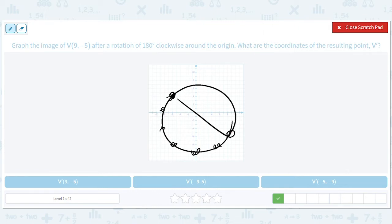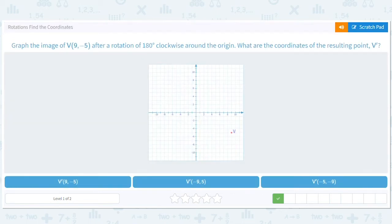So all we do is flip the signs of the 9 and the negative 5. It used to be 9 to the right. Now it's 9 to the left. Used to be 5 down. Now it's 5 up. So it should be negative 9, 5.